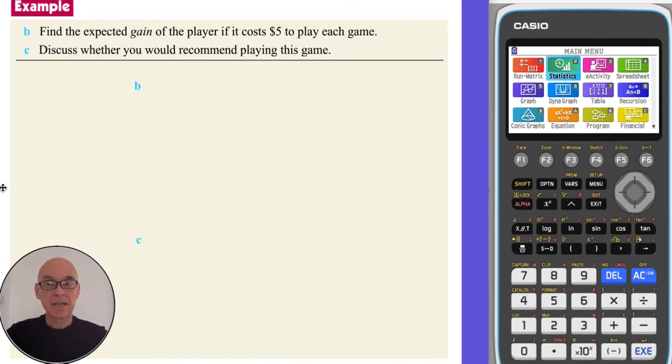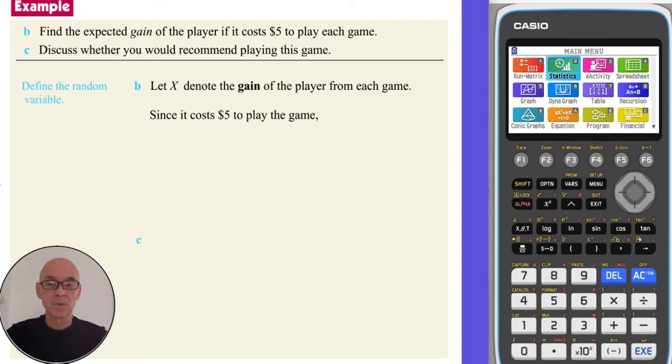Now to find the expected gain of a player, if it costs $5 to play each game, we define a random variable. We'll let X denote the gain of the player from each game. Since it costs $5 to play the game, the expected gain is found by subtracting the cost from the payout. 4 subtract 5 is minus $1.